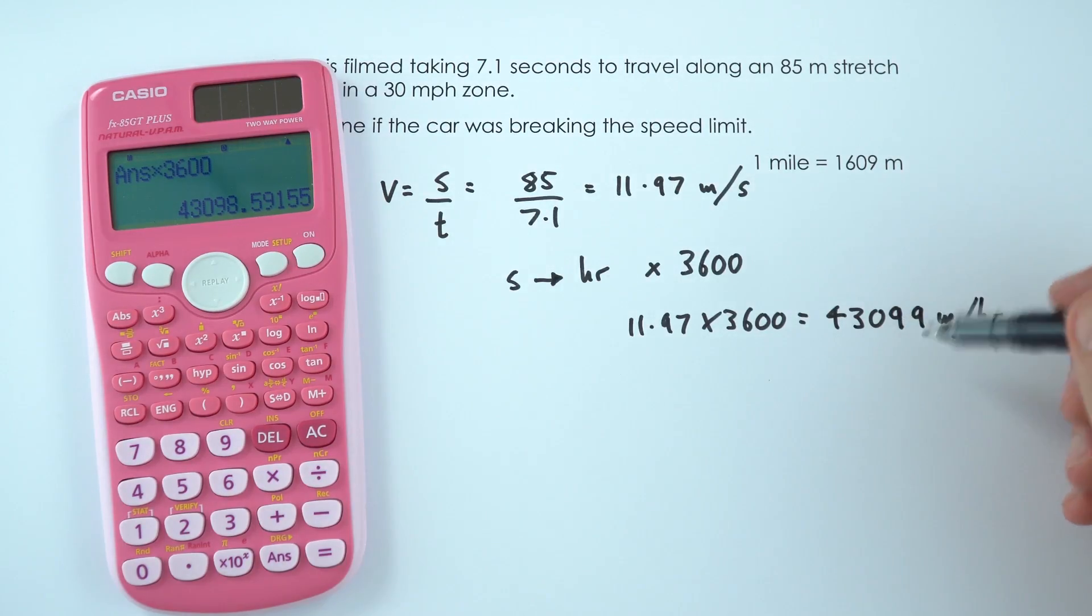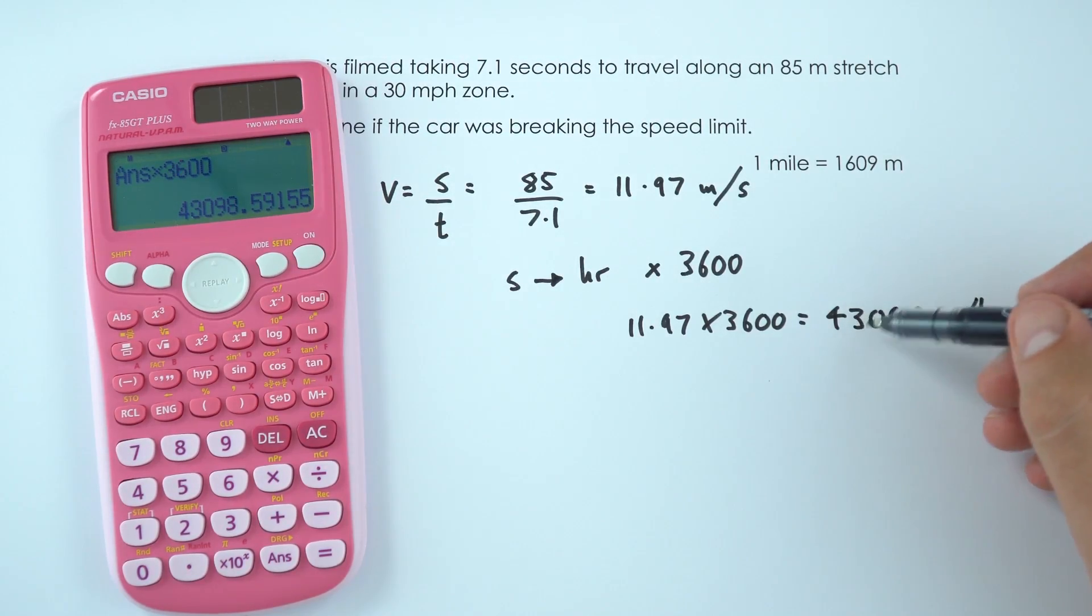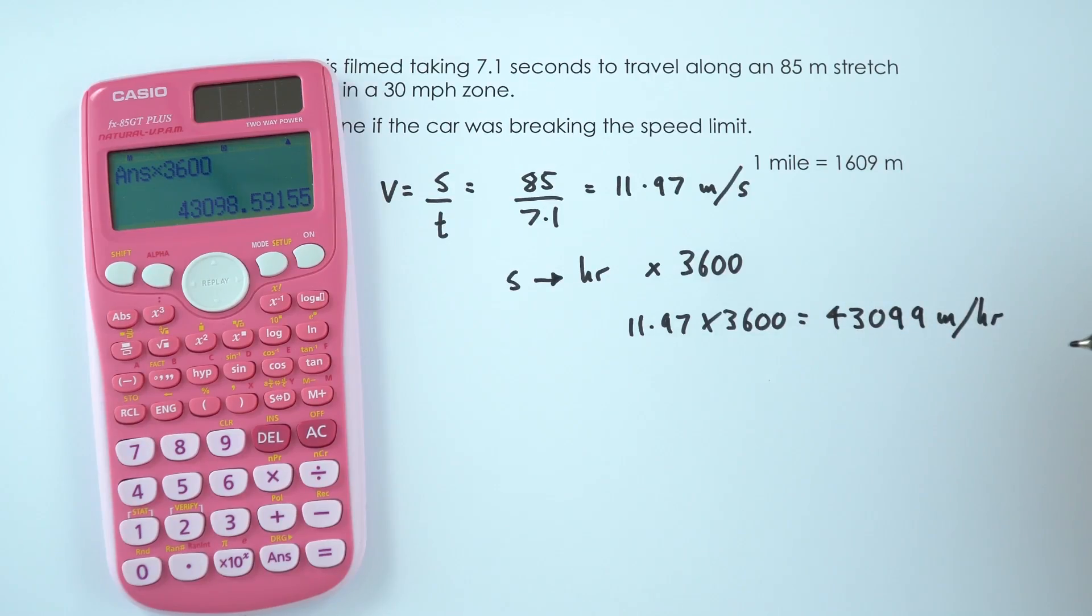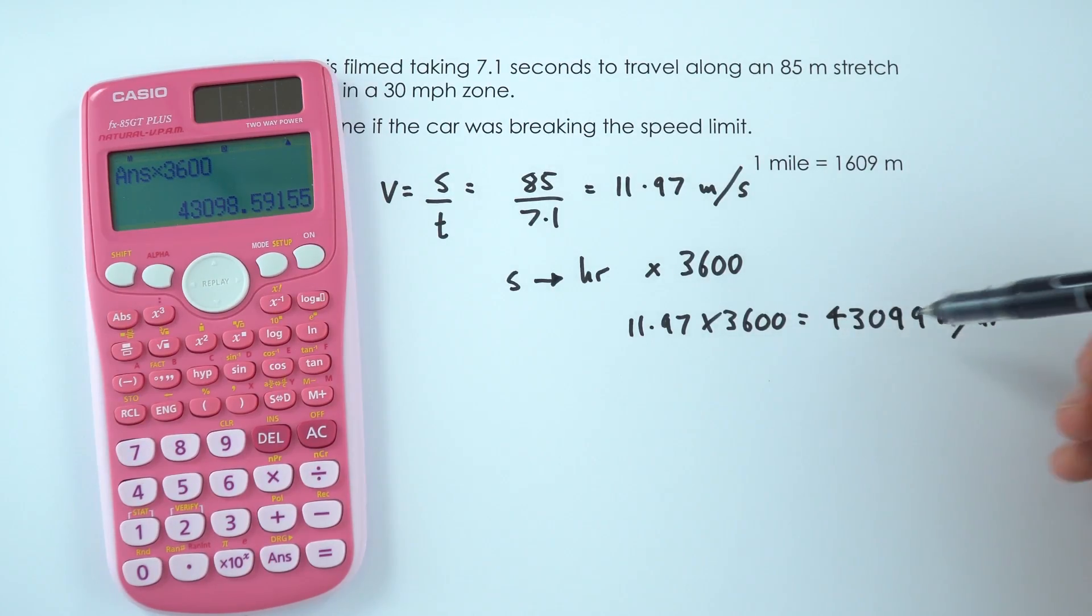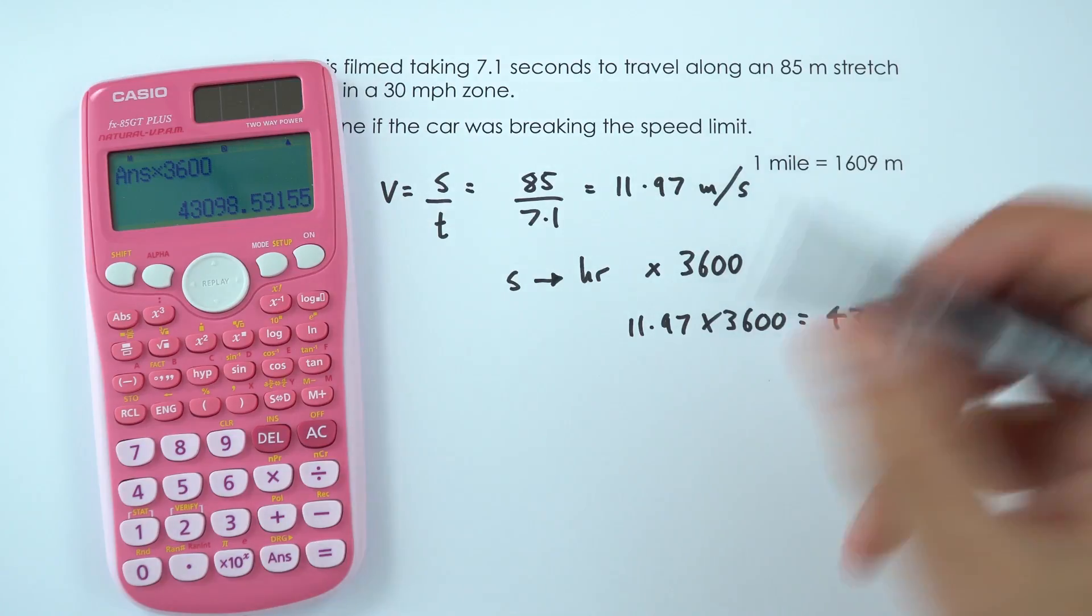Now that's a big number, but we can also think of that as being about 43 kilometres per hour. Anyway, we're going to convert from this distance in metres into miles.